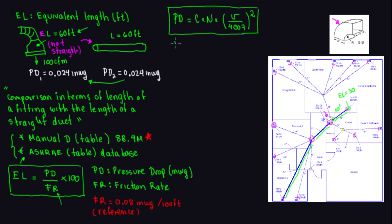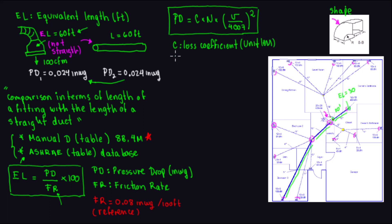So what is each variable? C is the loss coefficient. The loss coefficient depends on the shape of the fitting — whether it's an elbow, a T, a transition, a reduction, or a takeoff. There are so many shapes, and that's why there's a database and Manual D tables where you can find all the fitting combinations and their corresponding loss coefficients. C is unitless — dimensionless.